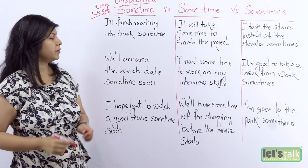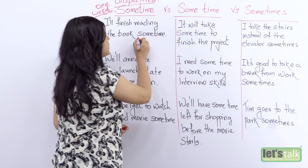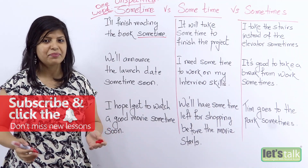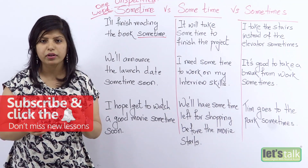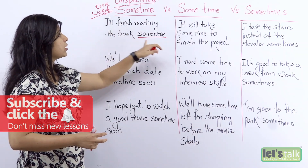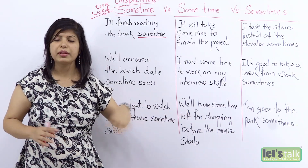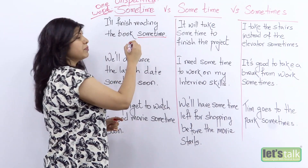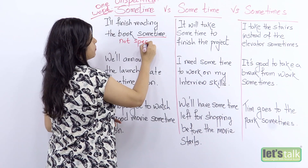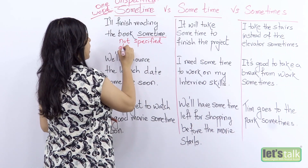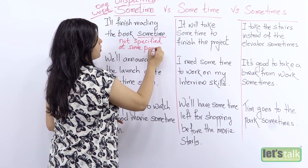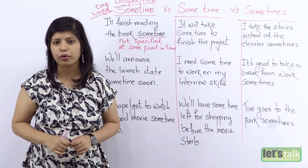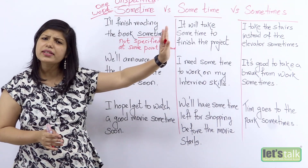Let's look at the first example: 'I'll finish reading the book sometime.' So if you're an avid reader and you have so many books to read, when you're talking about a particular book you could say 'I'll finish reading the book sometime,' which means I know I'm going to finish it but I'm not sure when — sometime in the future. Maybe next week, maybe next month, or maybe the day after tomorrow. We are not sure; it's unspecified and at some point in time which we don't know.